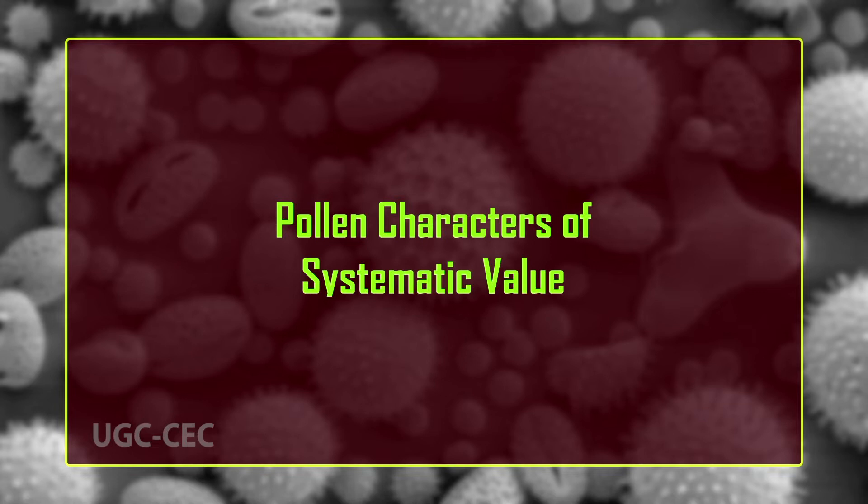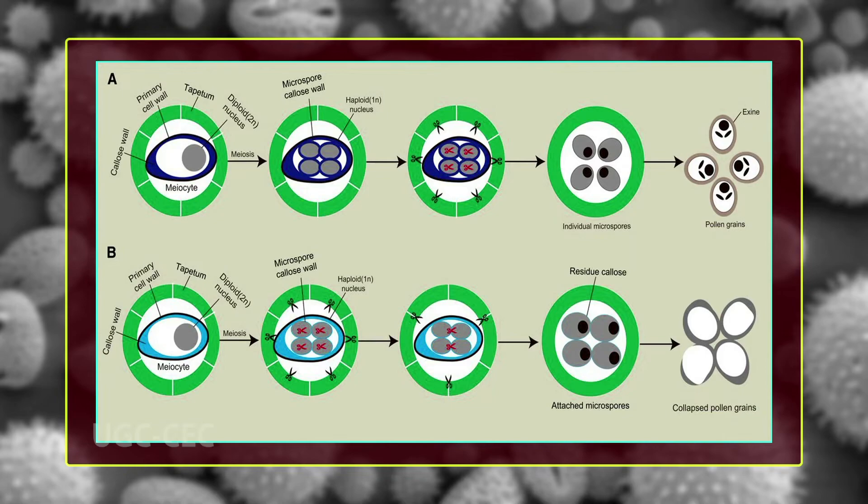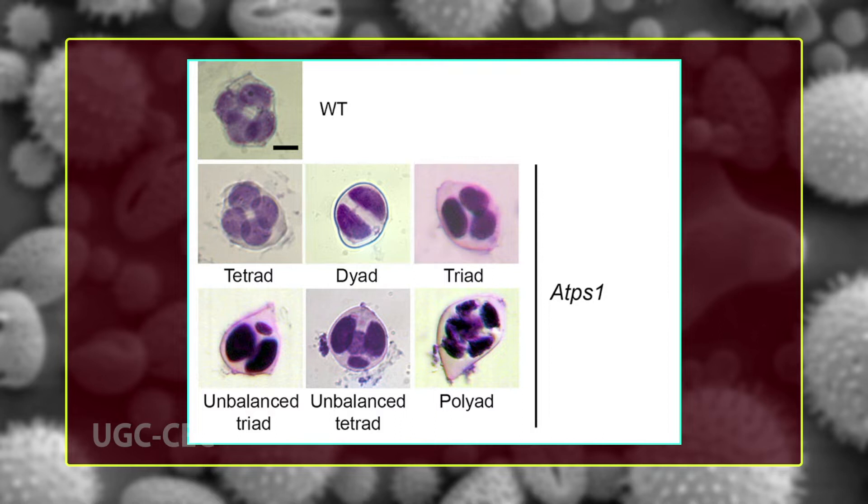Now we will discuss pollen characters of systematic value, starting with pollen aggregation. Microsporogenesis yields four microspores which mature into four pollen grains. In the majority of angiosperms, the pollen grains separate prior to release; such a pollen grain is known as a monad. In rare cases, pollen grains are released fused in pairs and are known as dyads.